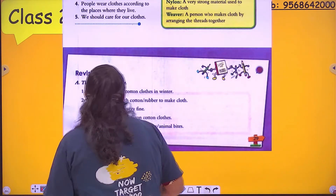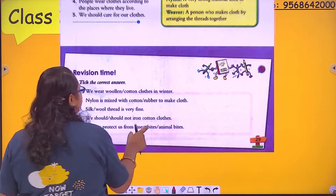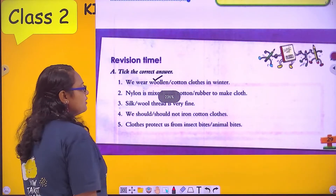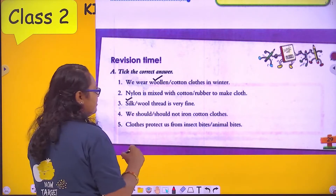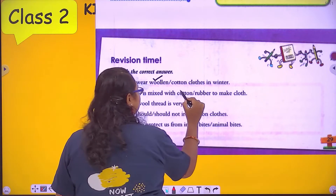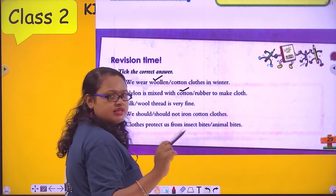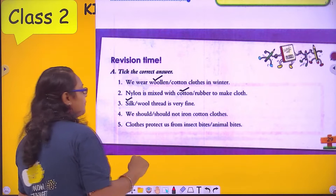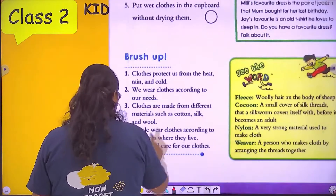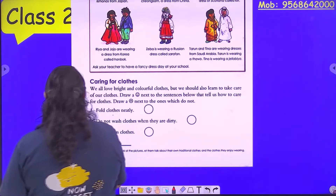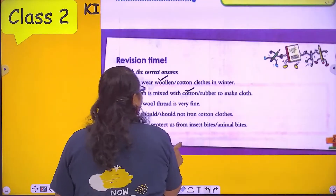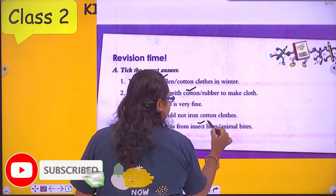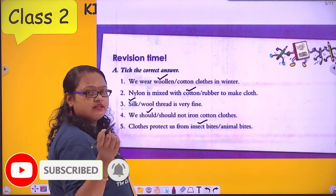Let's come to the exercise. Tick the correct answer. We wear woolen clothes in winter. Silk is very fine. Nylon is mixed with cotton to make a cloth — it is never mixed with rubber. We should iron cotton clothes. Clothes protect us from insect bites — they never protect us from animal bites, but always protect us from insect bites.